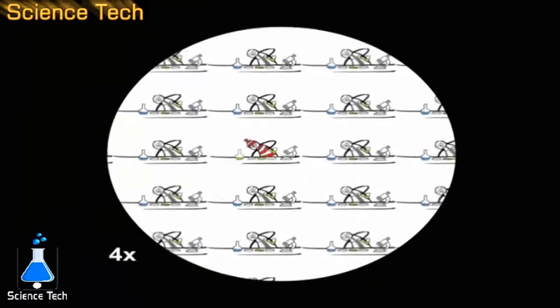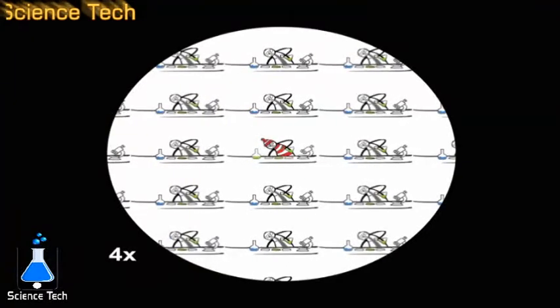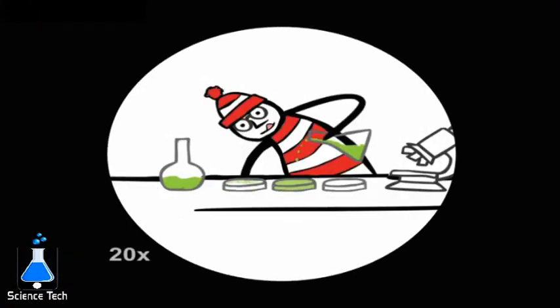Centering the lowest powered objective on the area of interest before moving to a higher power greatly increases the chances of finding the desired specimen.